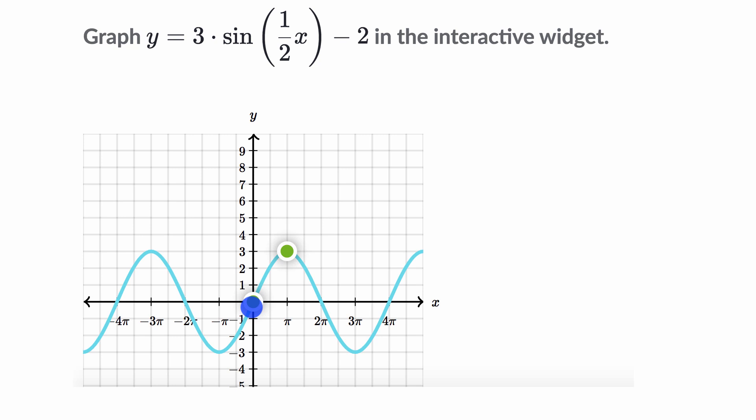Or another way to think about it is we're going 3 above the midline and 3 below the midline. So this right over here is the graph of 3 sine of 1/2 x.